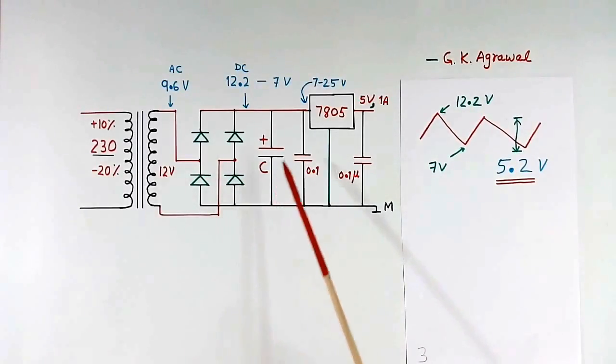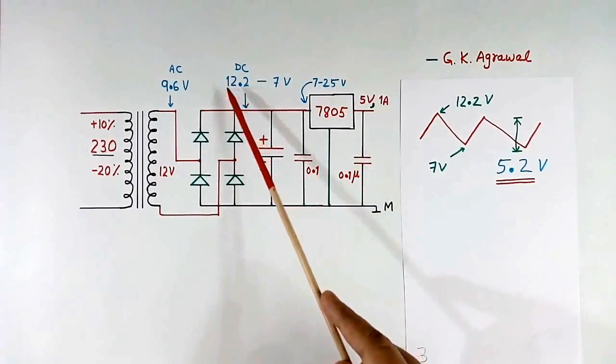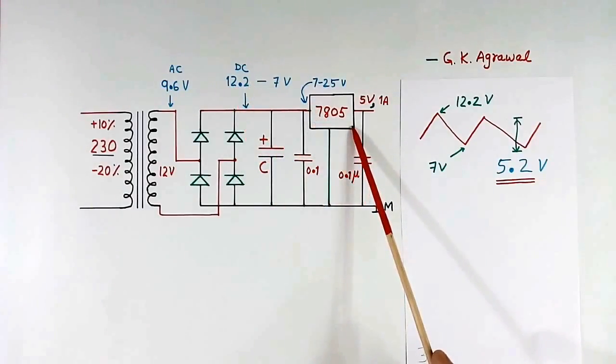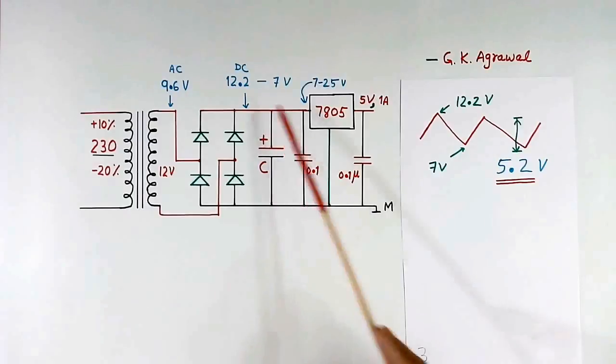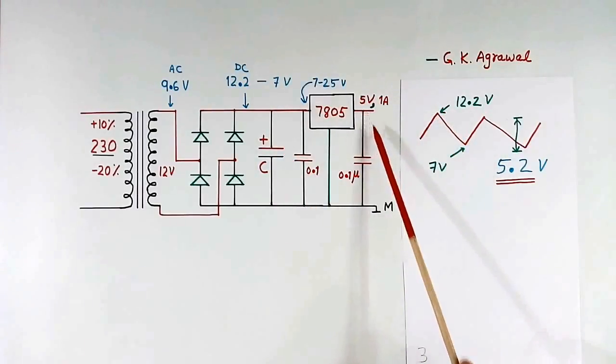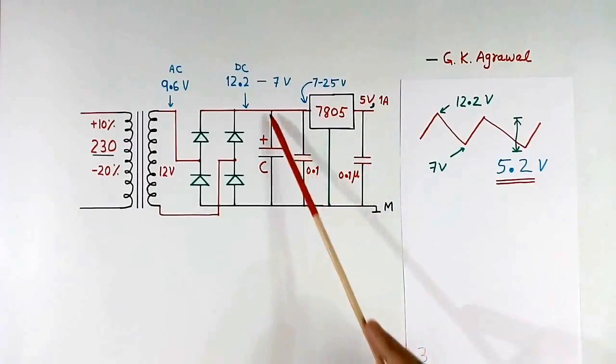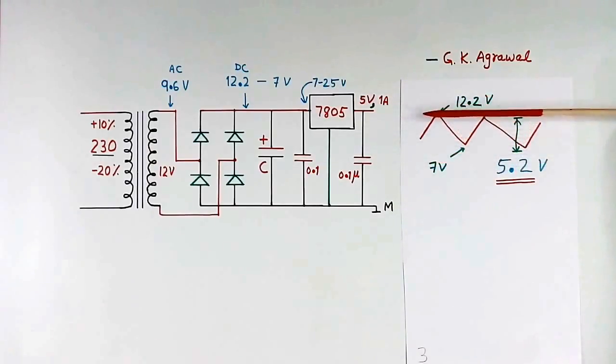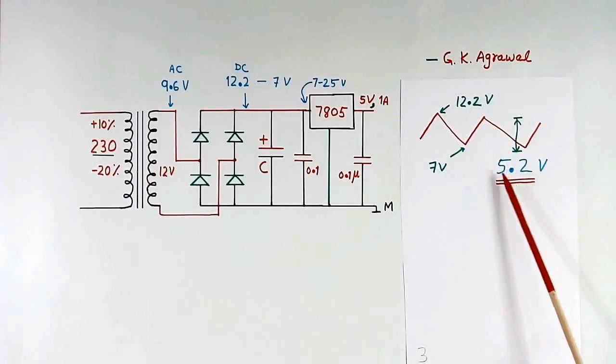Now we will calculate how much this capacitor will discharge when we connect a load. Just now we calculated maximum voltage at this point is 12.2 volt. Now if you see the catalog of this regulator, then it is written that minimum voltage at this point should be 7 volt. This means this capacitor can be allowed to discharge up to 7 volt because of this load. So here voltage was 12.2 volt peak. When we connect a load, capacitor will start discharging like this and it can go minimum 7 volt. So net voltage drop between this point and this point will be 12.2 volt minus 7 volt will be equal to 5.2 volt.